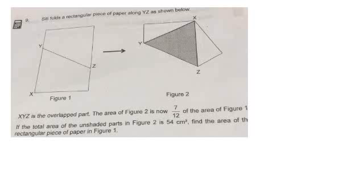Okay, that's why XYZ is the overlap part. The area of figure 2 is now 7 over 12 the area of figure 1. So this 7 is actually for figure 2 which is 7 units and this 12 is for figure 1 which is 12 units.